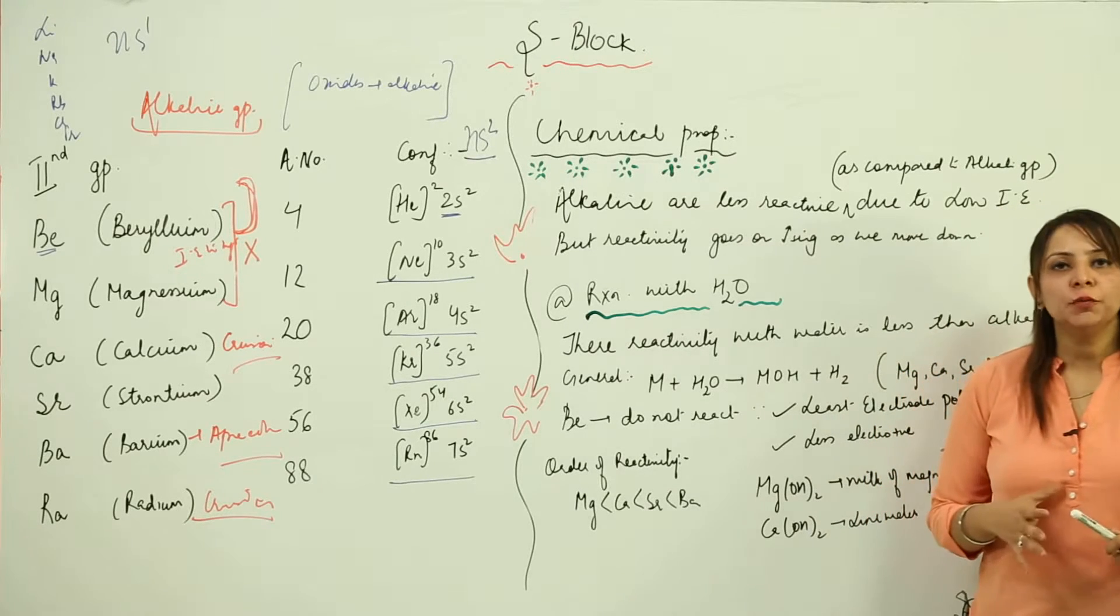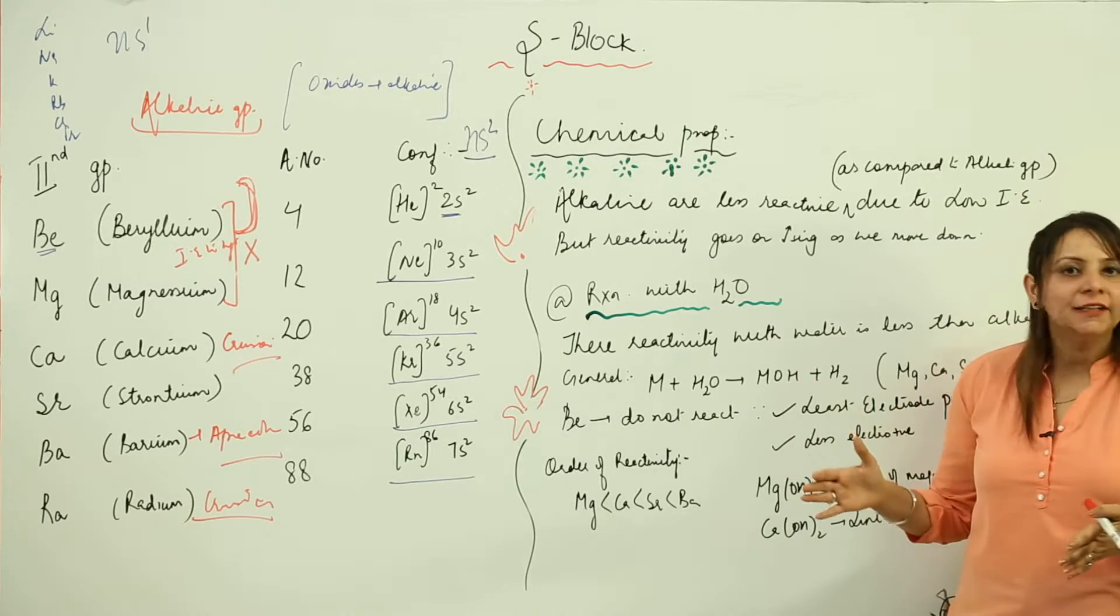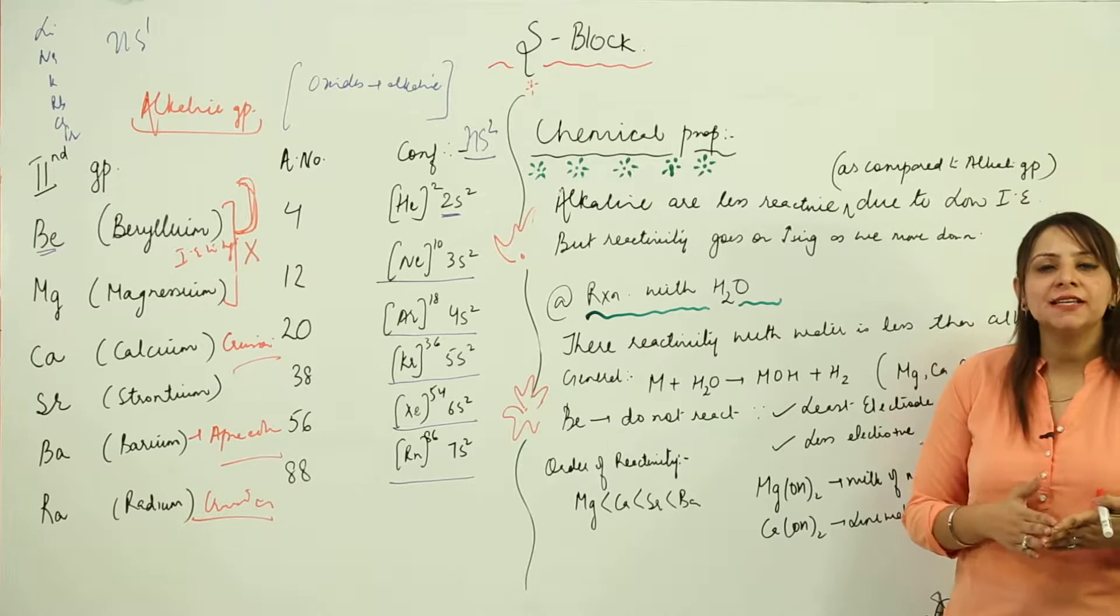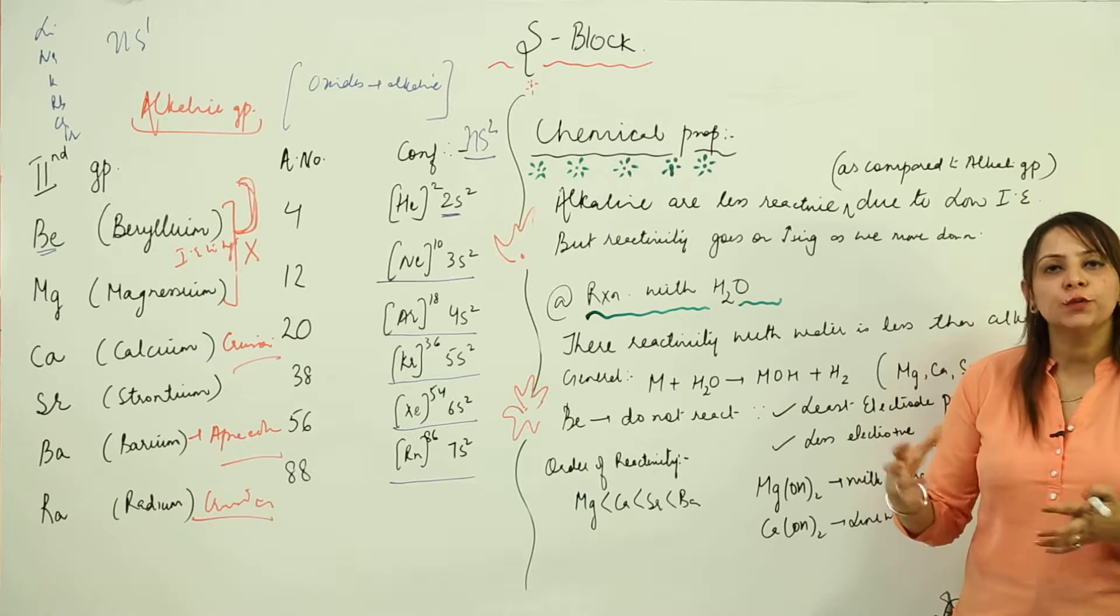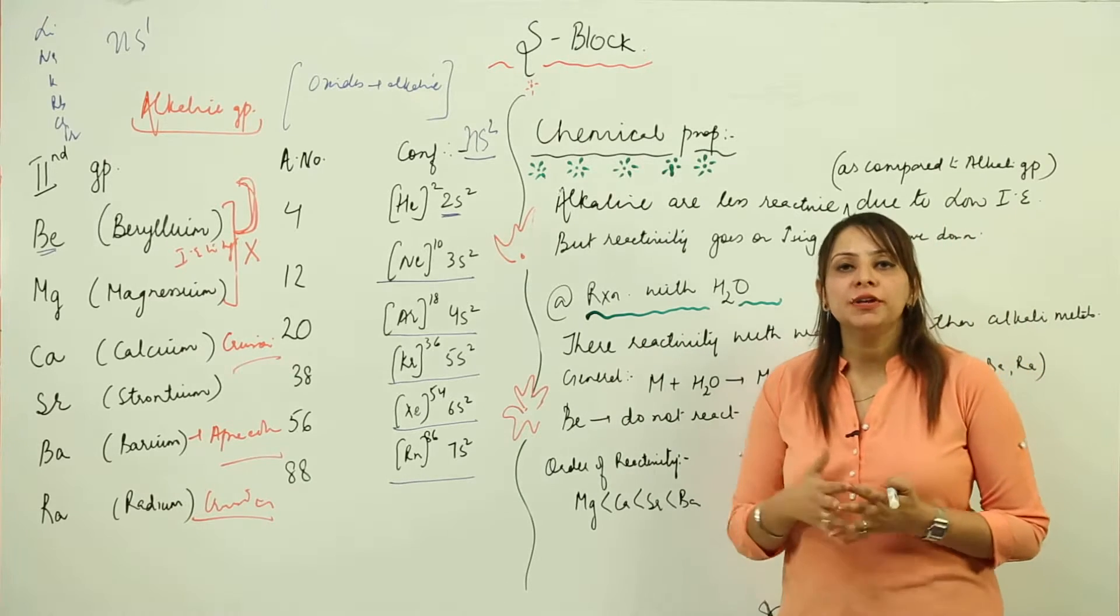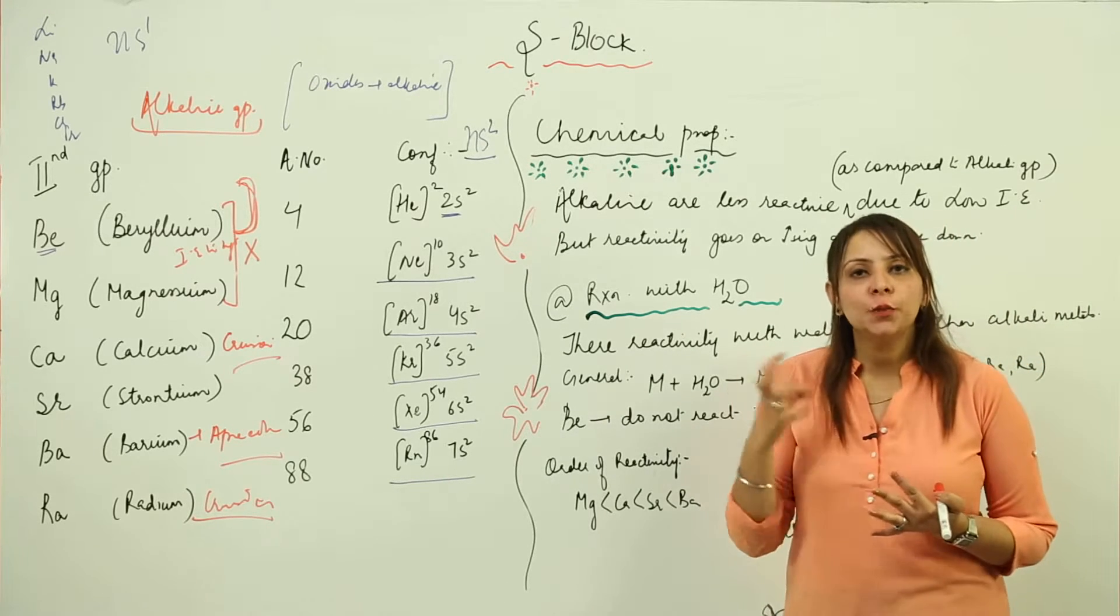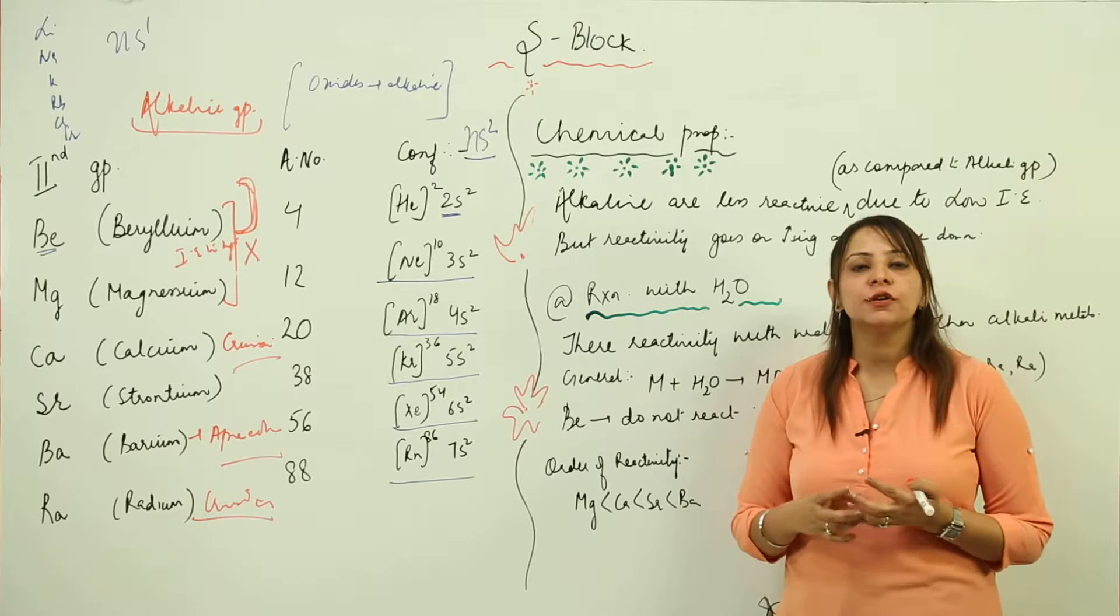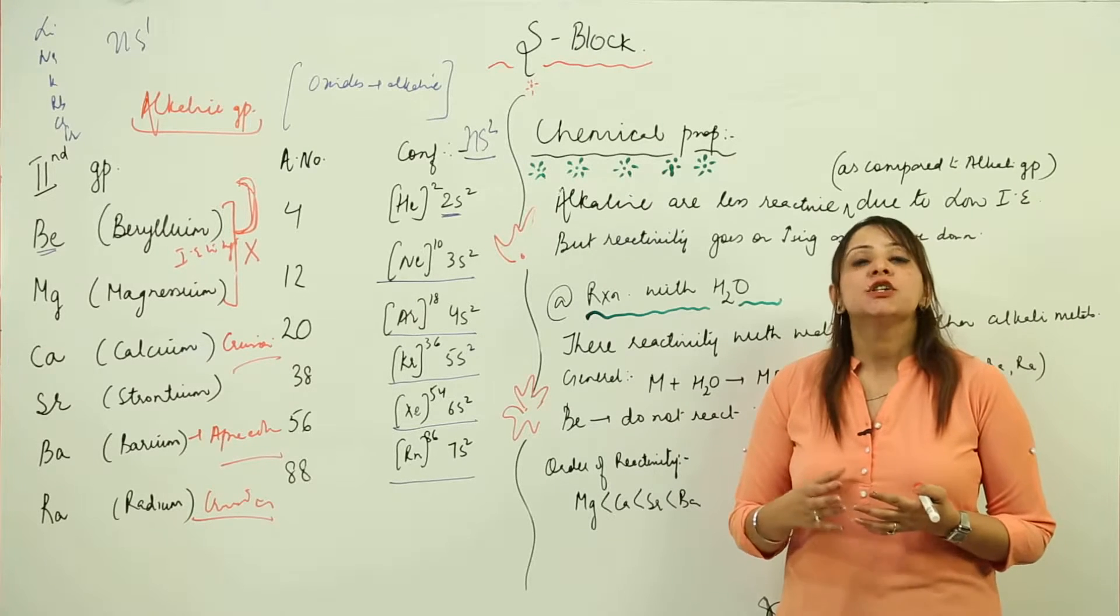Now we are starting with the chemical properties of alkaline earth metals. The first property is how they react with water. Before we start with the chemical properties, you should know about the reactivity. As you know, they are smaller in size than alkali metals, so if you talk about their reactivity, that means they are comparatively less reactive.